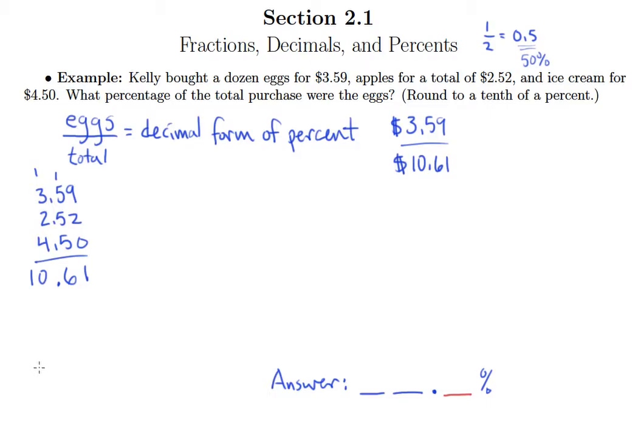However, understand that when we divide $3.59 by $10.61, we're not going to get this. The reason for this is because the decimal form of a percent always has a decimal point that's to the left two places from where it would be in the percentage. So to round to the nearest tenth of a percent, I am going to actually need to round to the nearest thousandth in this division problem.